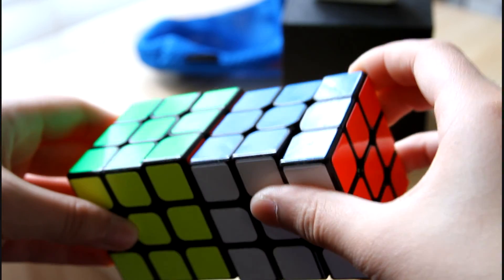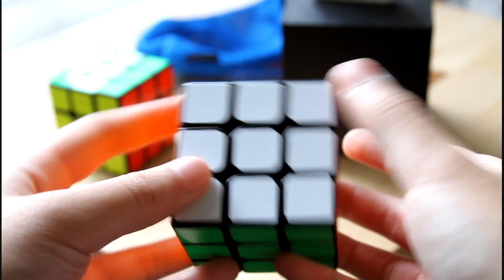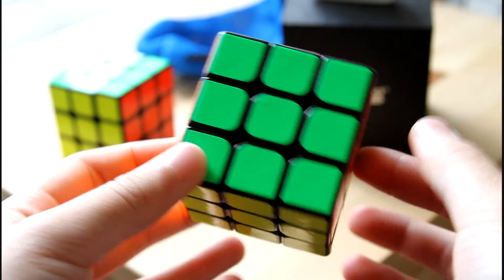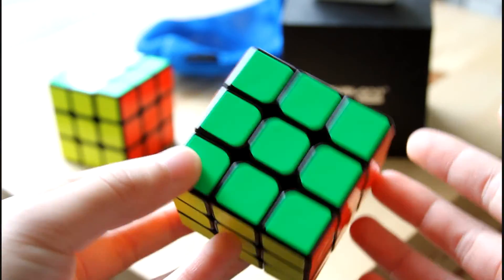To start off, this cube is 56mm, which is only 1mm from 57mm, and 1mm isn't too big of a difference and it's not really noticeable. 56mm is actually the ideal size for me.